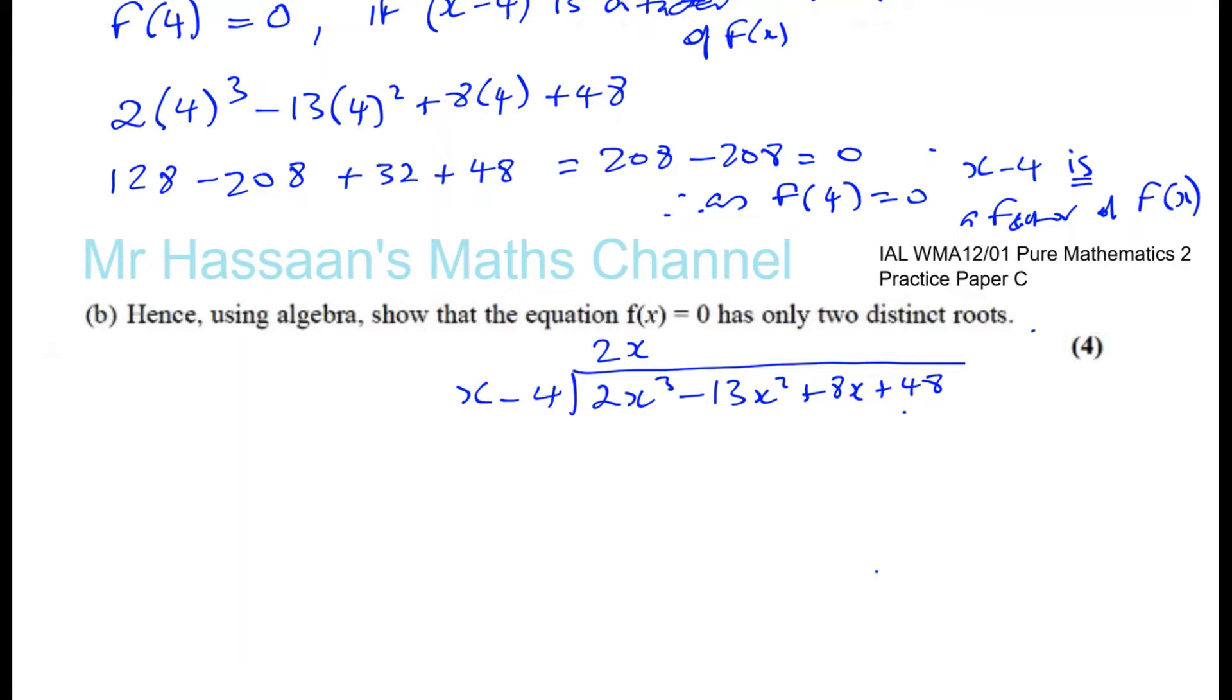Okay, now we can do the long division. So x into 2x³ goes 2x² times. Then we multiply 2x² by this. It gives you 2x³. 2x² times minus 4 is minus 8x². And I've got to subtract these two. And when I subtract, this becomes 0. This is minus 13 plus 8, which is minus 5x², bring down the next term which is plus 8x.